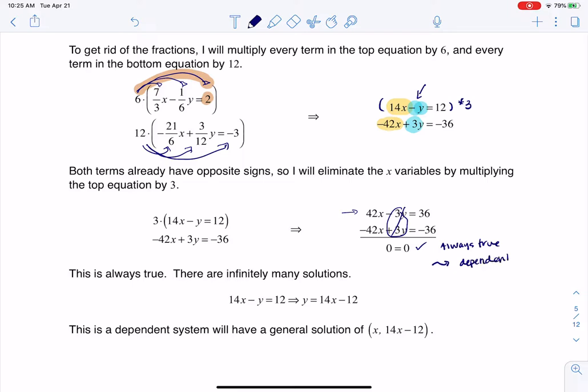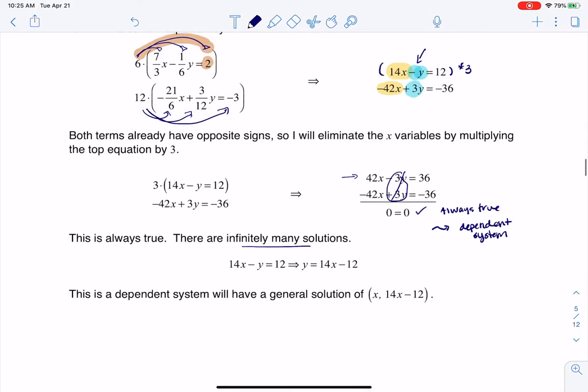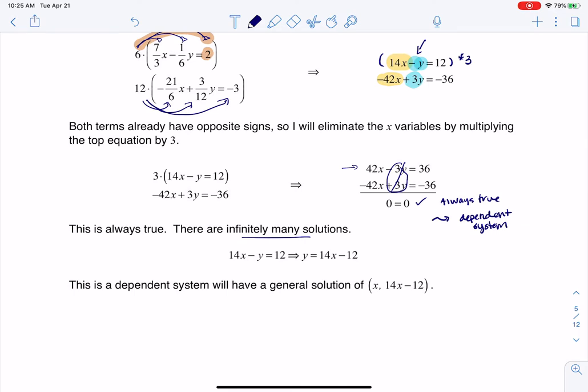Or another way of saying that is you have infinitely many solutions. So then what you do is you just take that equation. And it doesn't matter which one you take because they are the same equation. I opted to pick that version only because the Y had a nice coefficient of negative 1. I solved for Y.